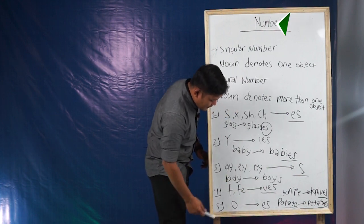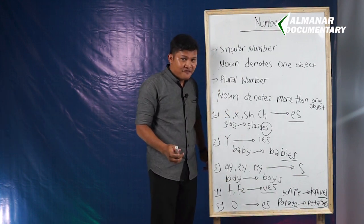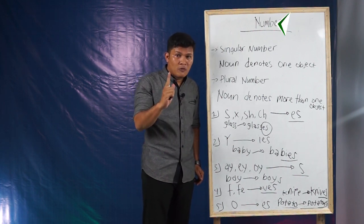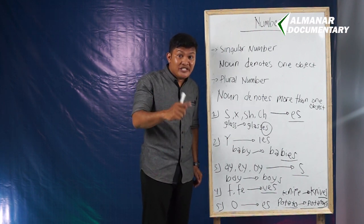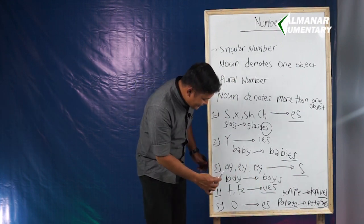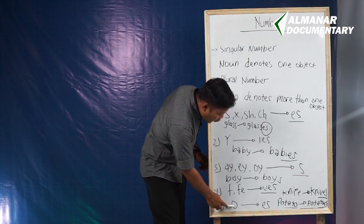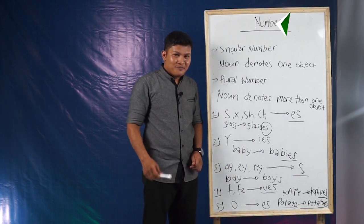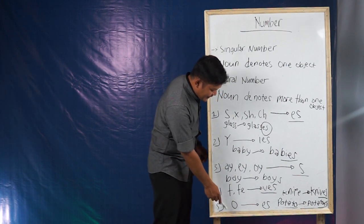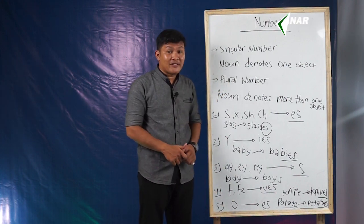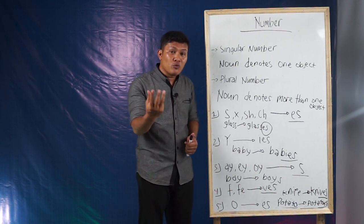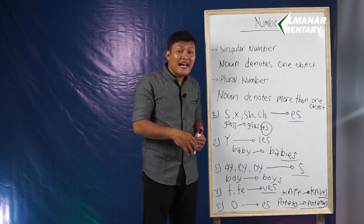Yang keempat, jika akhiran dari singular adalah F atau V, maka ia berubah menjadi VES. Misalnya 'knife' (satu pisau) berubah menjadi 'knives' — F berubah menjadi V. Dan yang terakhir adalah O: 'potato' (kentang) berubah menjadi 'potatoes'.